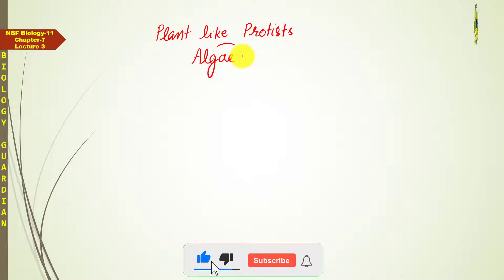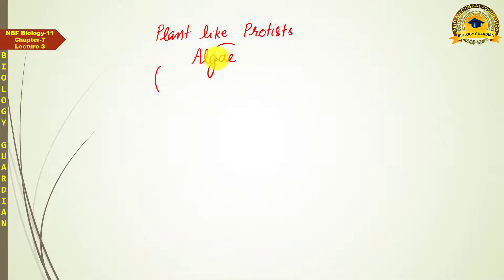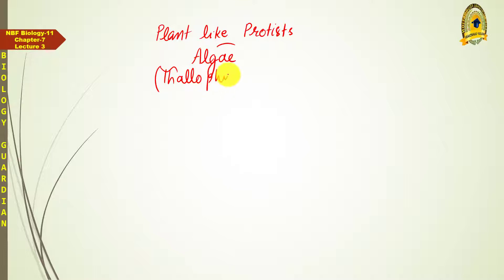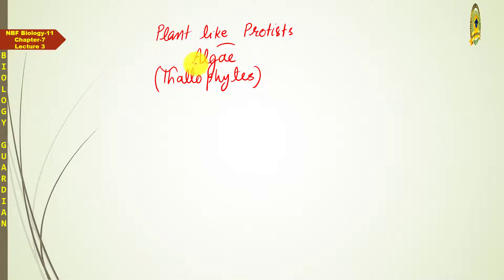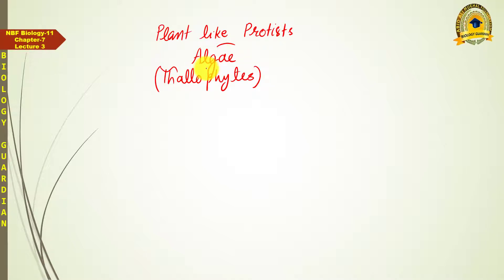These plant-like organisms were previously included in the plant kingdom, but now they have been separated from the plant kingdom and placed in Kingdom Protista. These plant-like protists that we are discussing today are actually a group of organisms called algae. When they were previously classified in the plant kingdom, they were placed in the Thallophyta group — called thallophytes — because their body cannot be clearly differentiated into root, stem, and leaves.